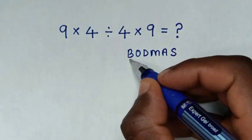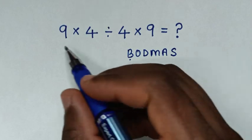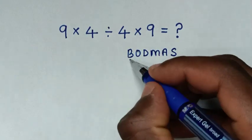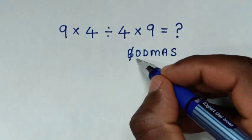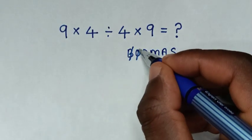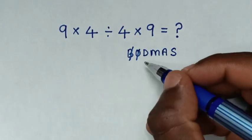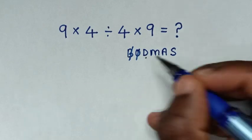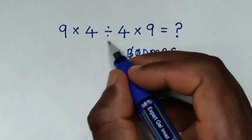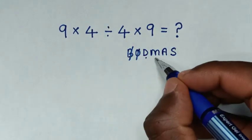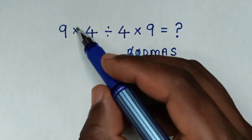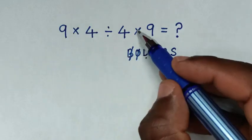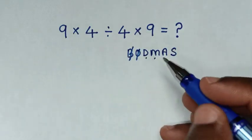From the BODMAS rule: B stands for Bracket — in this problem we don't have brackets. Also we don't have Order or exponents. D stands for Division — we have division, this one. M stands for Multiplication — we have two multiplications, this and this.